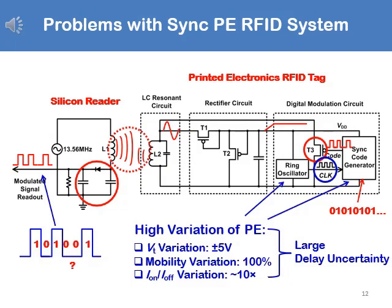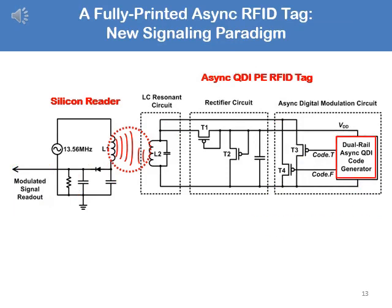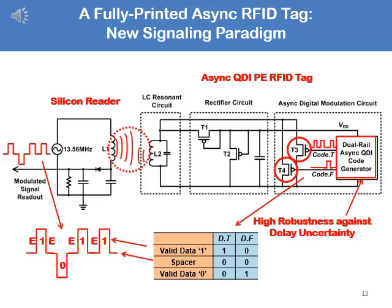Looking at the problem in more detail: because we are printing the ring oscillator, transistors, and code generator, if VT variations are large, mobility variations are 100%, and the ION/IOFF ratio variation is 10x, the probability that the synchronous RFID circuit or system would not work is high. So we propose to replace those parts shown in red on the right-hand side of the RFID with asynchronous logic — particularly QDI — where timing is embedded innately in the data, automatically accommodating any variations.